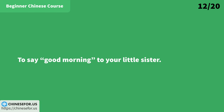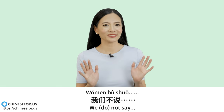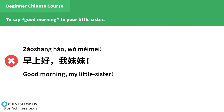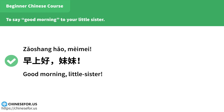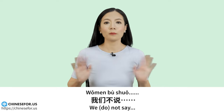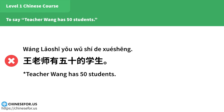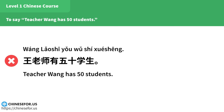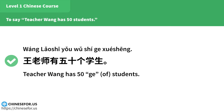To say good morning to your little sister: 我们不说「早上好，我妹妹」，我们说「早上好，妹妹」。To say Teacher Wang has 50 students: 我们不说「王老师有五十的学生」或「王老师有五十学生」，我们说「王老师有五十个学生」。